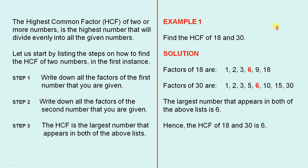Example 1: find the HCF of 18 and 30. The factors of 18 are 1, 2, 3, 6, 9, and 18. These are all the numbers that divide into 18 evenly with no remainder.